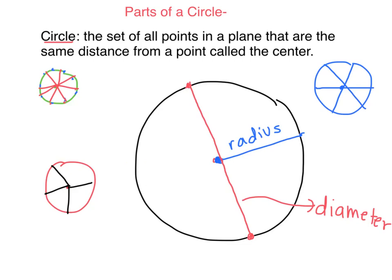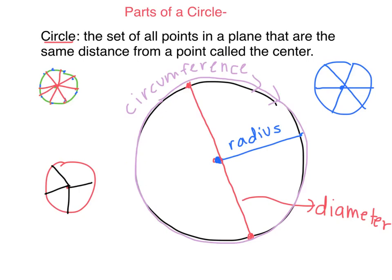The last word you need to know is basically the definition for perimeter of a circle — the outside of a circle. If I measured all the way around the outside of a circle, that's called the circumference. We're going to talk about that more in this video. These are the parts of a circle that you're going to need to know.